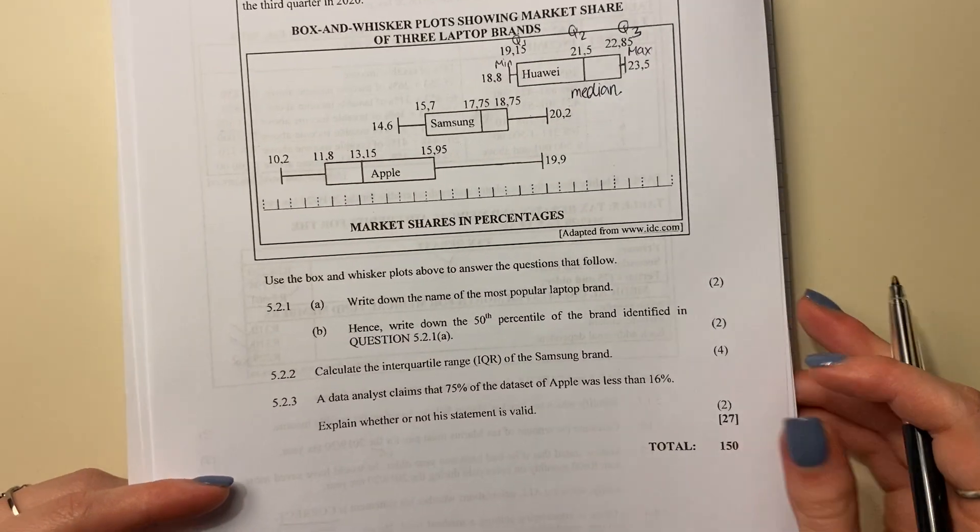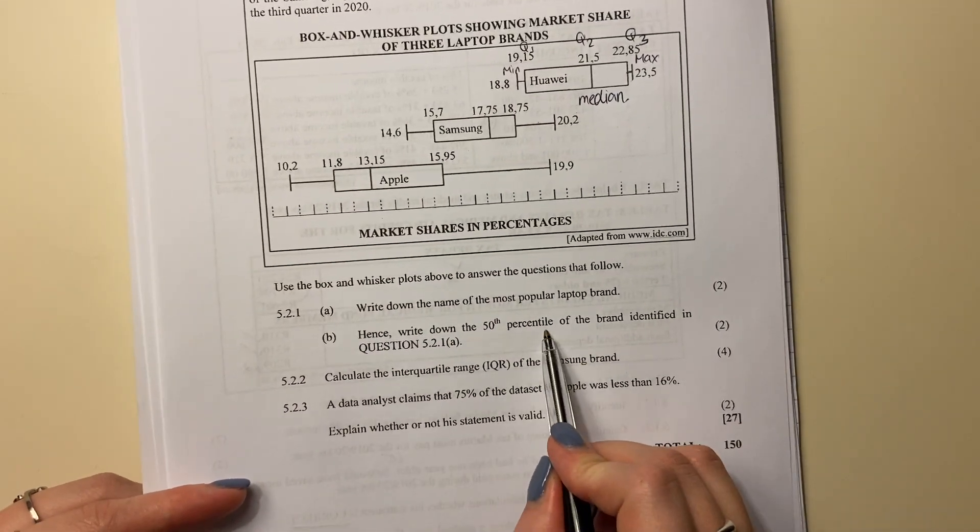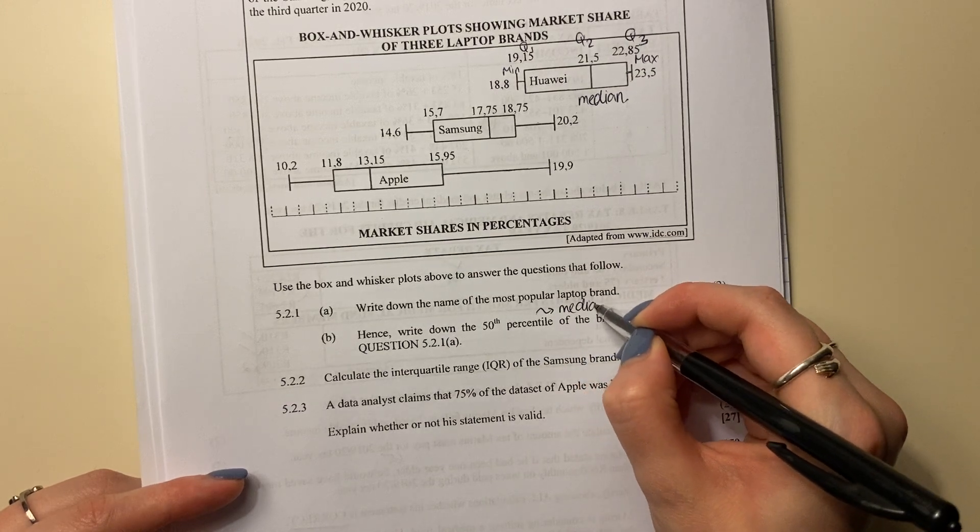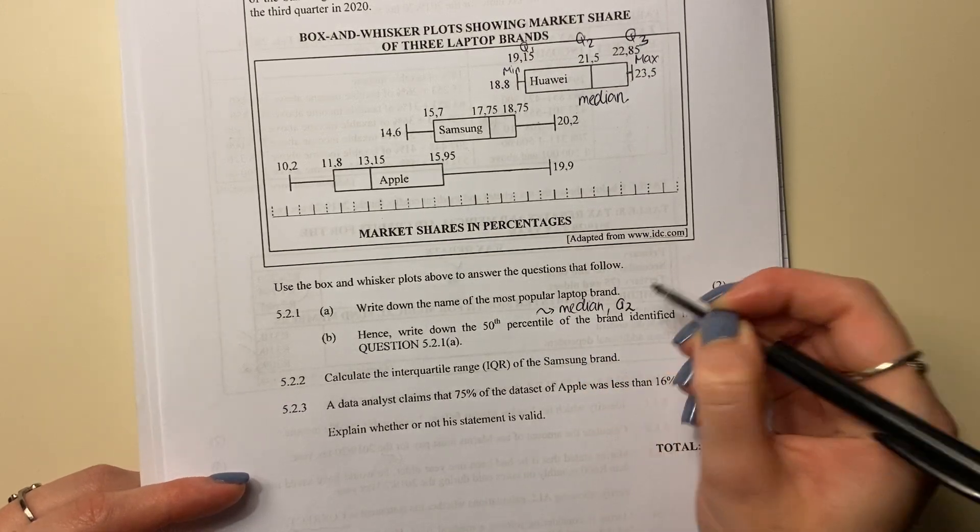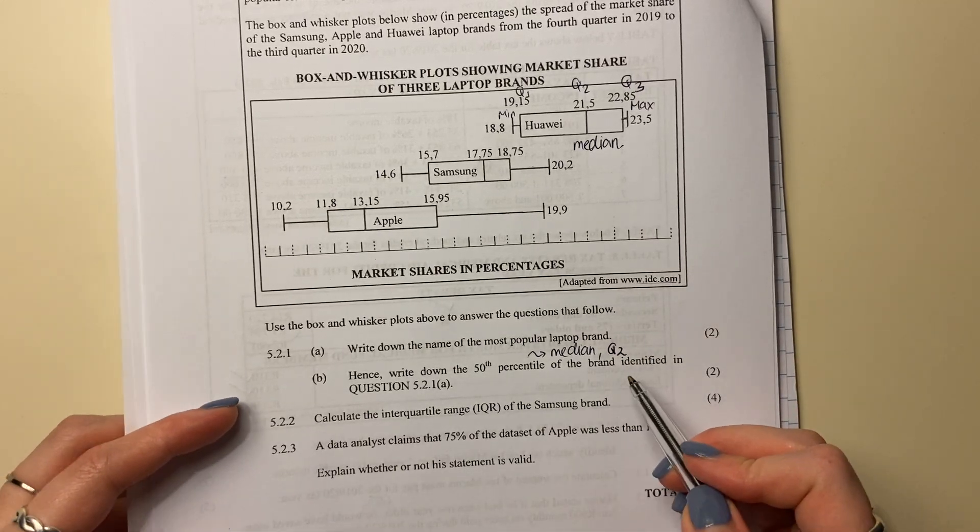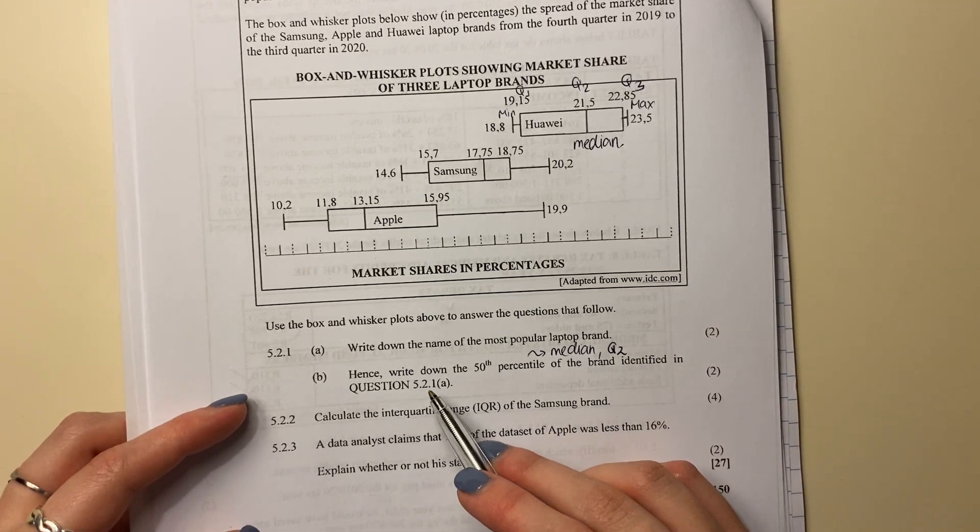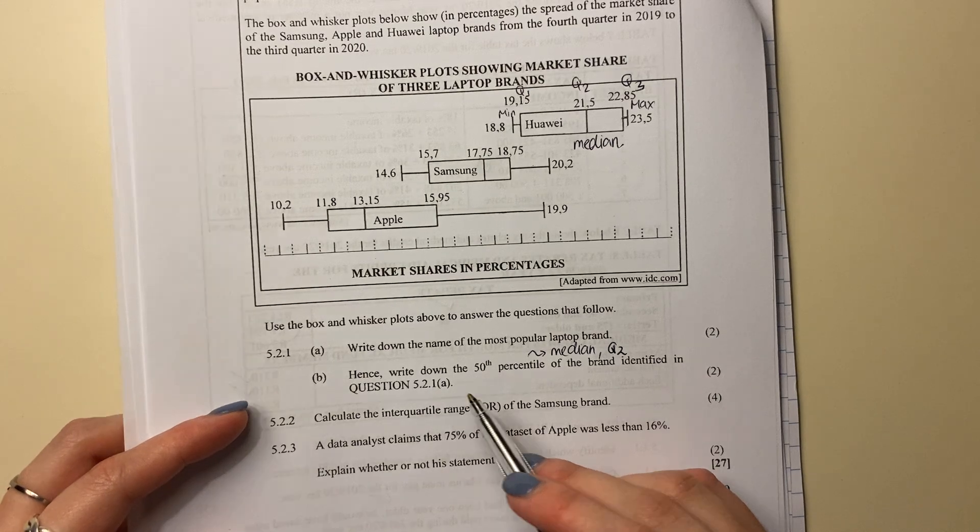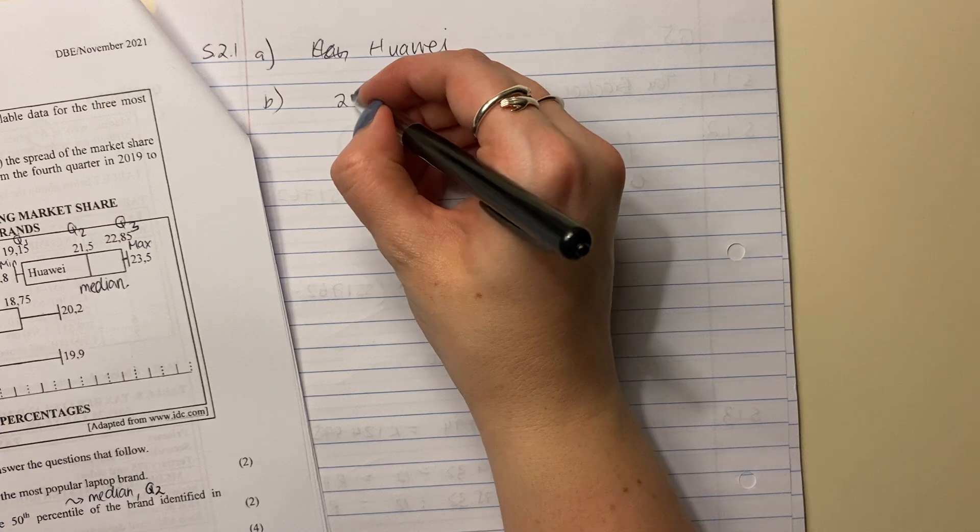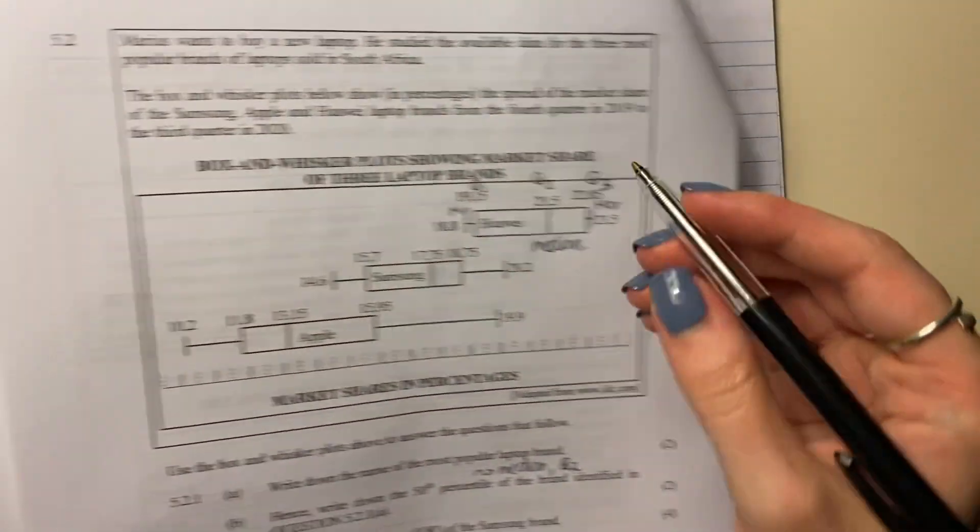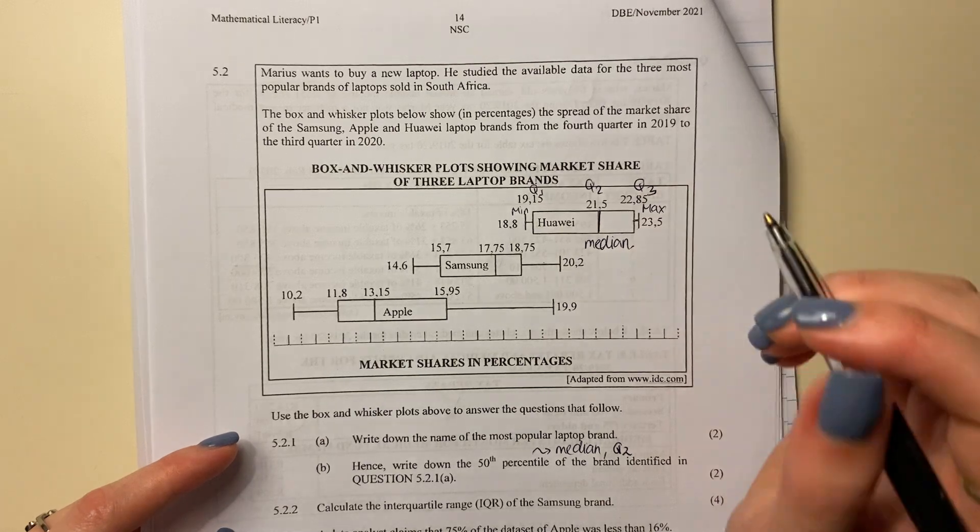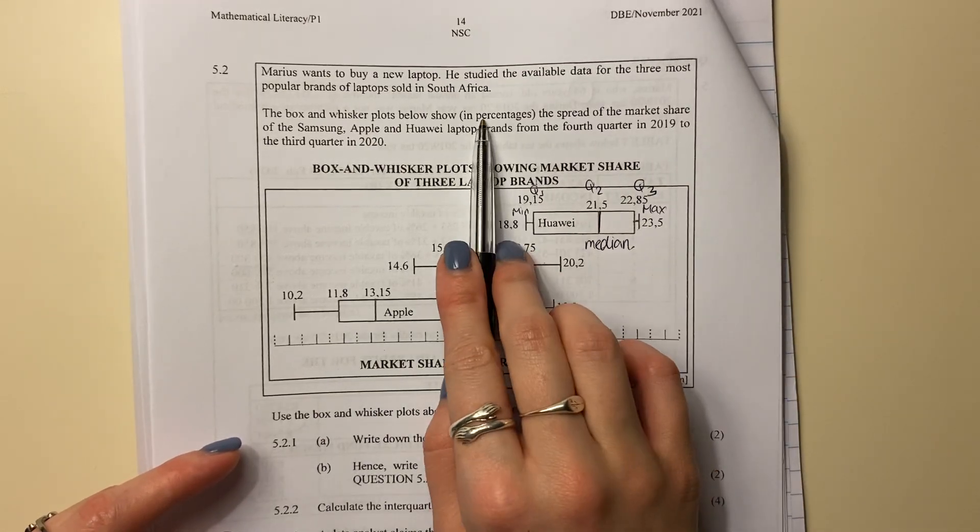Then it says, hence write down the 50th percentile. The 50th percentile is the same as the median, or Q2. Don't let that freak you out. Percentile of the brand identified in question 5.2.1a. So what's the median, what's the middle value? It's 21.5%. That middle value there. So don't just say 21.5. It tells you specifically that it's in percentages, so put in the correct unit. Don't mess around.